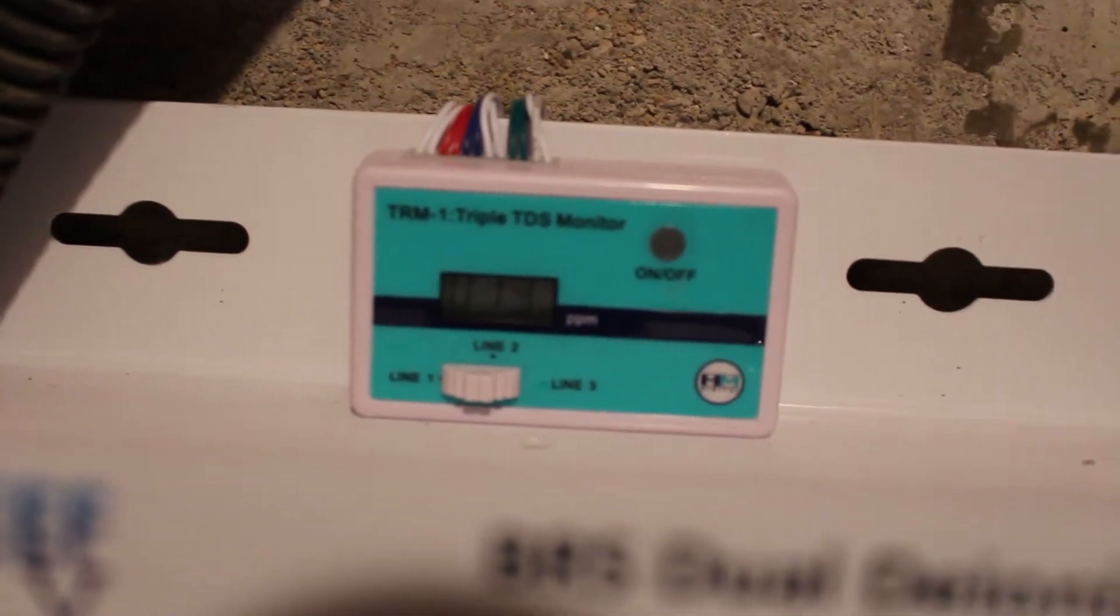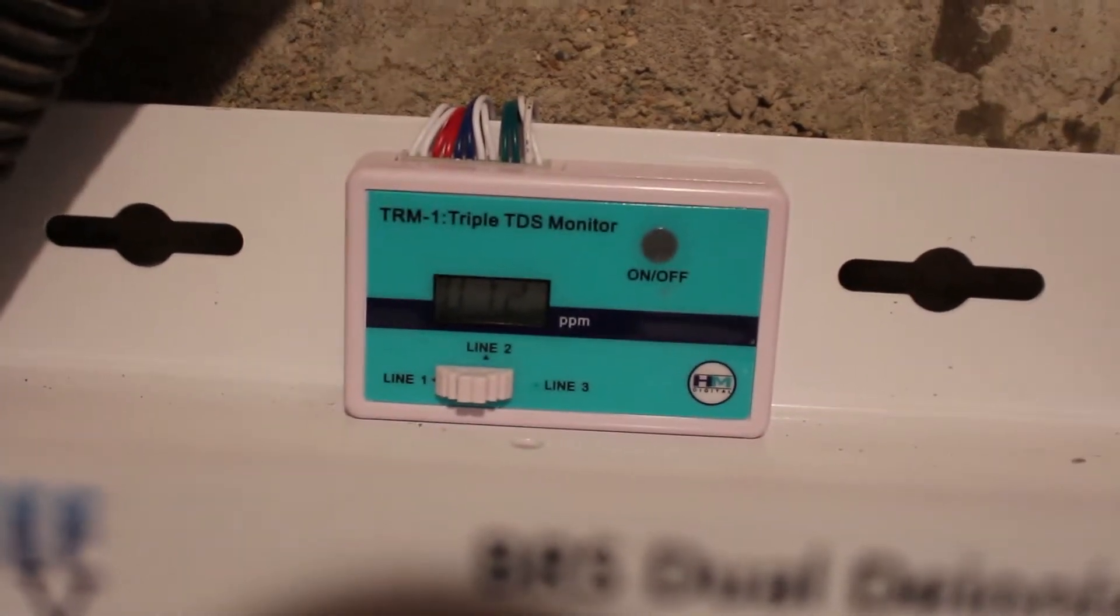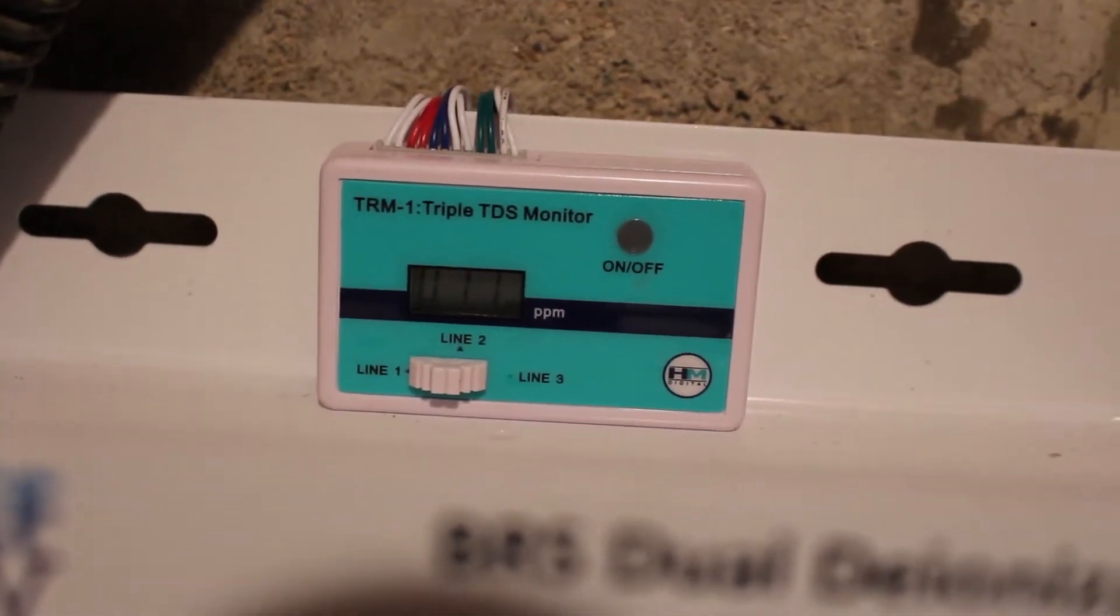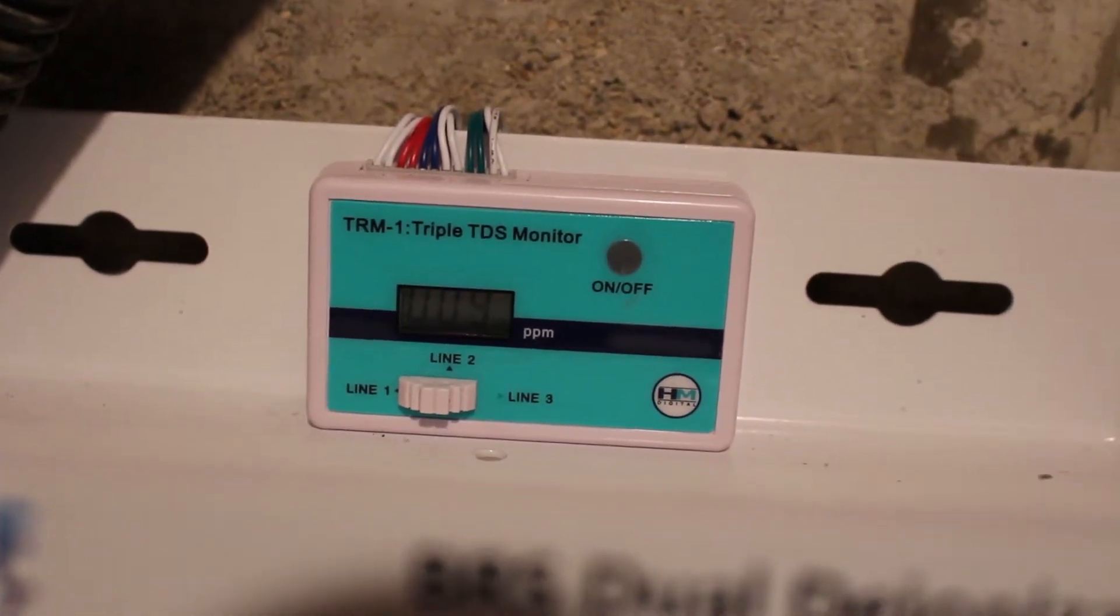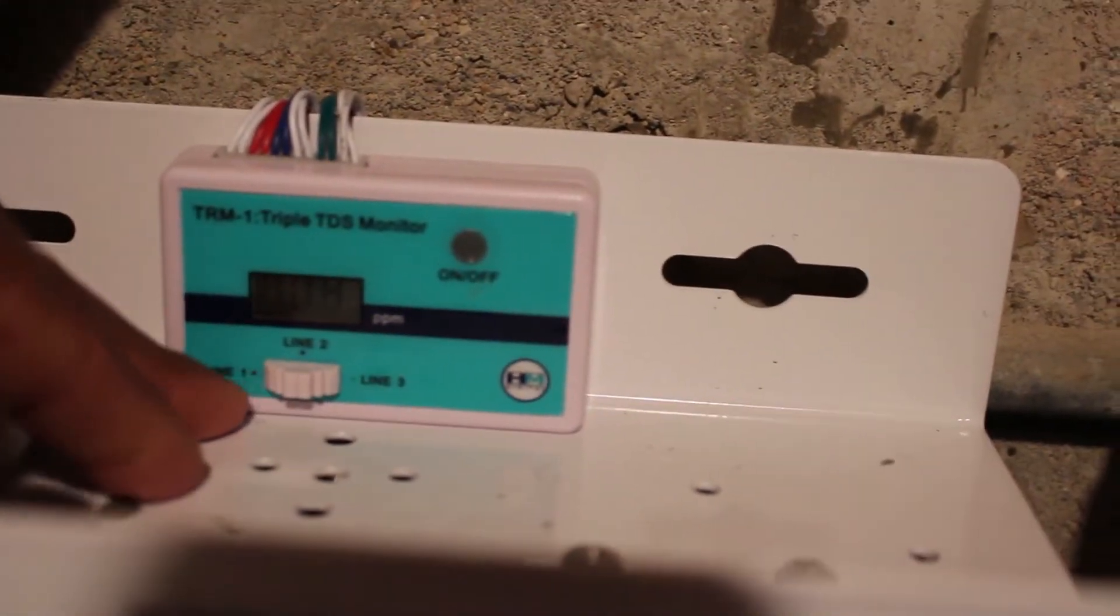So for this monitor I can turn it on see what it's reading. You can see the numbers. This is in line 1. Eleven. Ten. Nine. So it cleans it pretty good. Line 1.